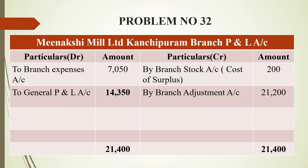Next is the branch profit and loss account. On the debit side, branch expenses account for Rs. 7,050. On the credit side, the branch stock account shows cost of surplus — surplus of stock is Rs. 300, and from the adjustment account we took profit of Rs. 100 — so the remaining Rs. 200 is the cost price of the surplus stock.